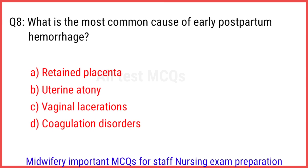Q8. What is the most common cause of early postpartum hemorrhage? The right answer is option B: Uterine atony.